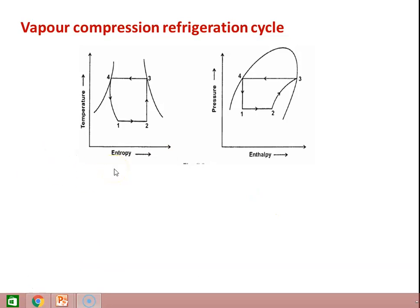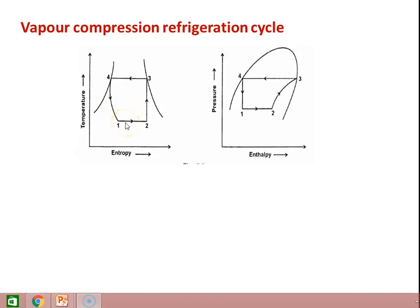In the vapor compression refrigeration cycle, there are four processes: 1 to 2 is in the evaporator, 2 to 3 is in the compressor, 3 to 4 in the condenser, and 4 to 1 in the throttling device. Process 1 to 2 is constant pressure heat addition, 2 to 3 is isentropic compression, 3 to 4 is constant pressure heat rejection, and 4 to 1 is constant enthalpy throttling.